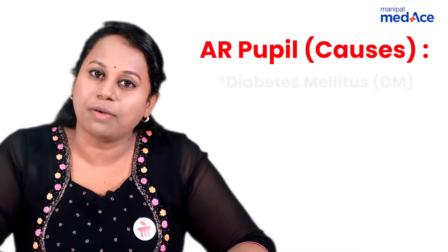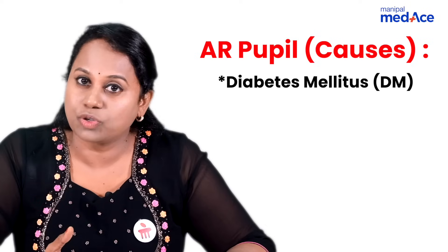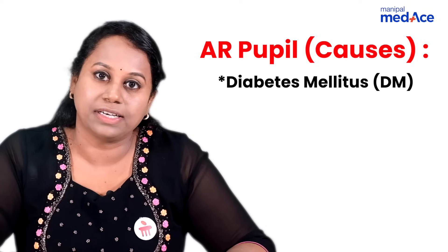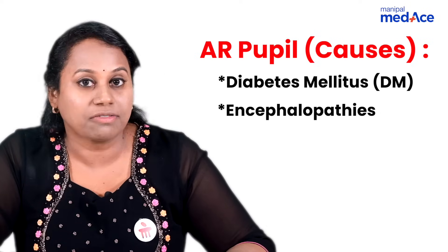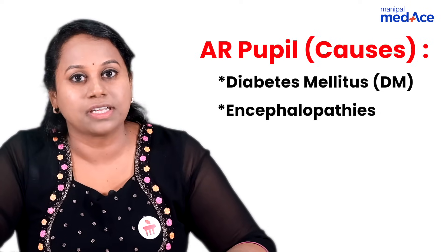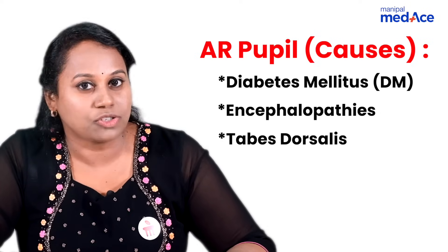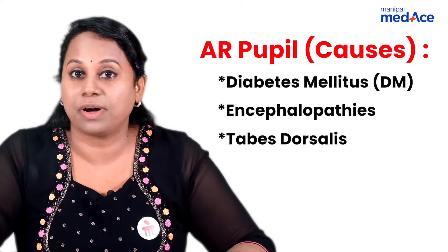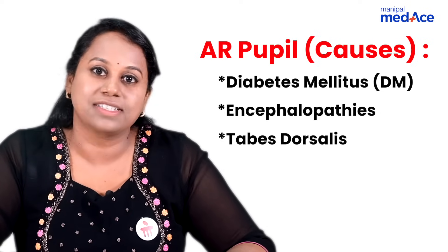Who will encounter Argyle Robertson Pupil? This can happen in uncontrolled diabetes mellitus, encephalopathies, or tabes dorsalis as a part of syphilis. That was an easy way of learning Argyle Robertson Pupil.